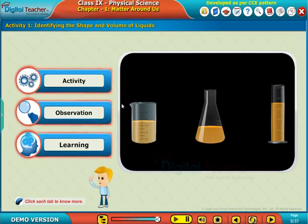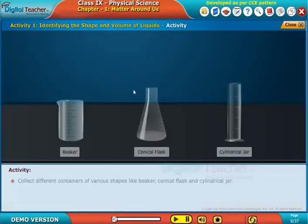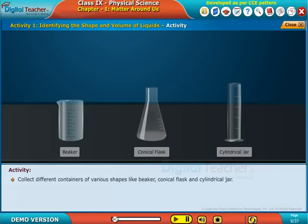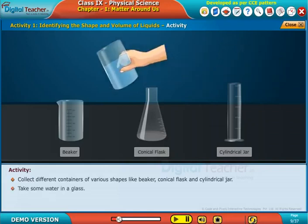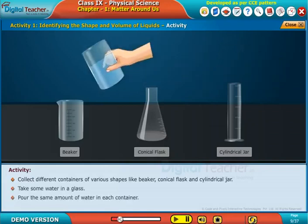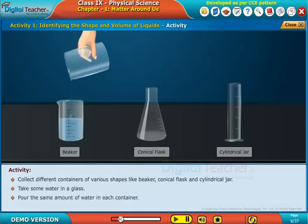Click each tab to know more. Collect different containers of various shapes like beaker, conical flask, and cylindrical jar. Take some water in a glass and pour the same amount of water in each container.